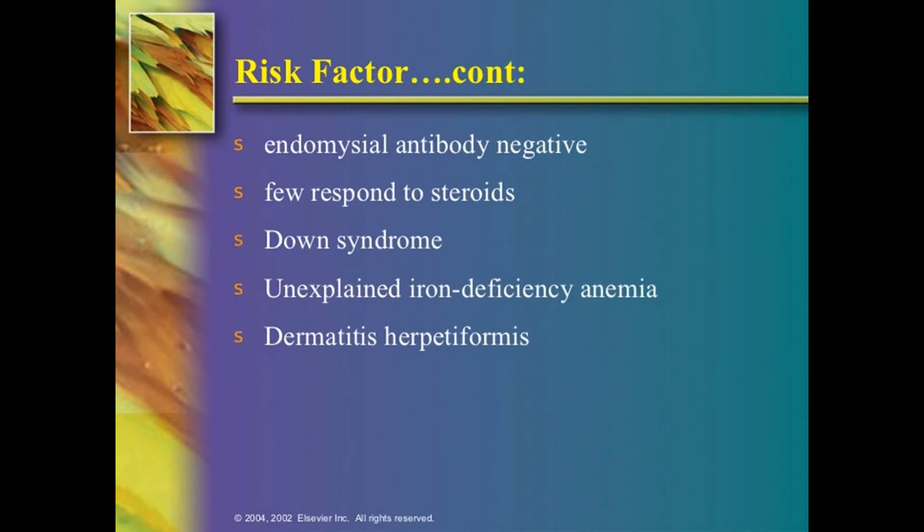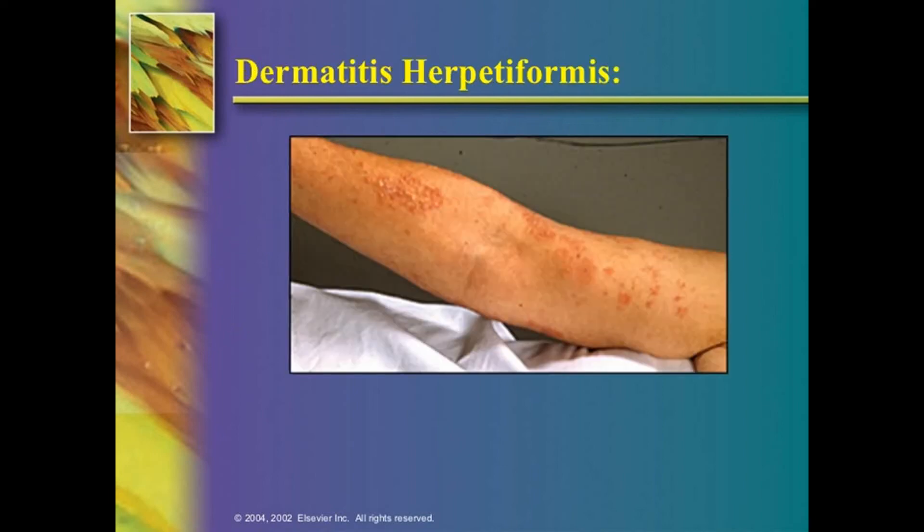Risk factors for worse prognosis include: endomysial antibody-negative gluten enteropathy, which is more prone to develop complications; those who respond only to steroids; Down syndrome associated with gluten enteropathy has worse prognosis; unexplained iron-deficiency anemia worsens prognosis. In 10–20% of cases, dermatitis herpetiformis — the vesico-bullous eruption — is present as seen in this slide.